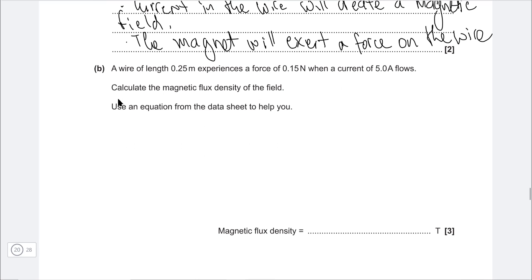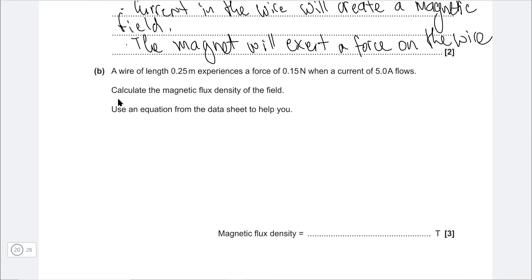Next one. A wire of length 0.25 meters experiences a force of 0.15 newtons when a current of 5 amps flows. We're looking for the magnetic flux density, which is just B. So we're going to use the F = BIL equation. And what I'm going to do is just rearrange that for the flux density, which is just B = F / (I × L). So our force is 0.15, divide that by the current which is 5.0 amps multiplied by the length which is 0.25. And plugging that into a calculator, we get 0.12 tesla.